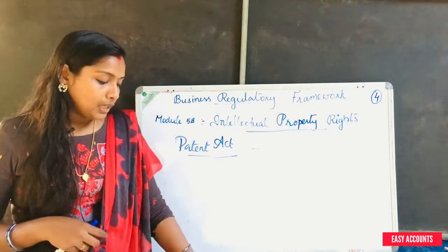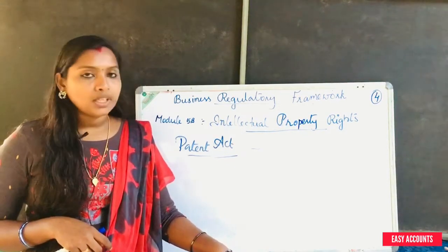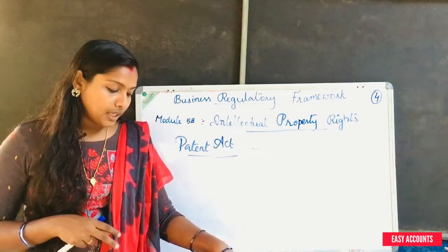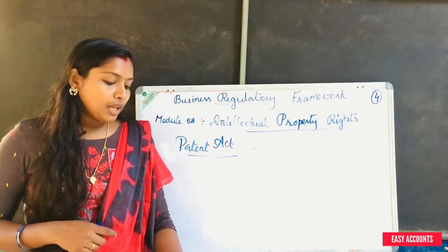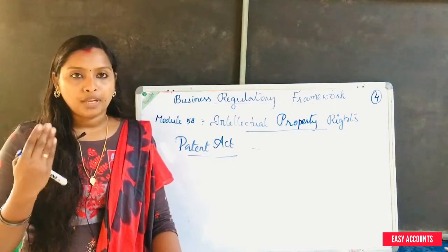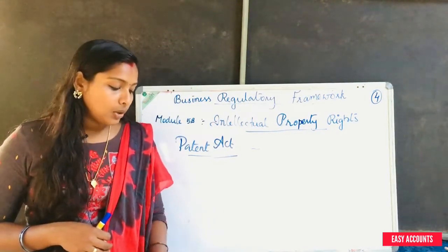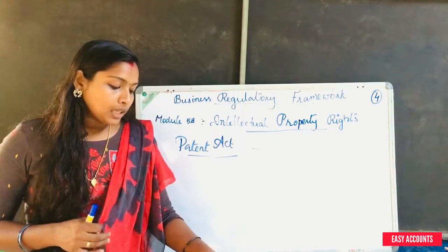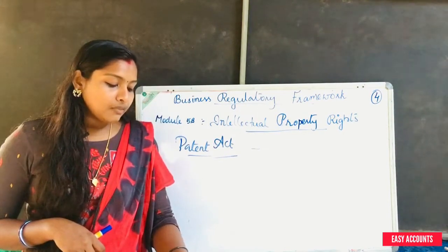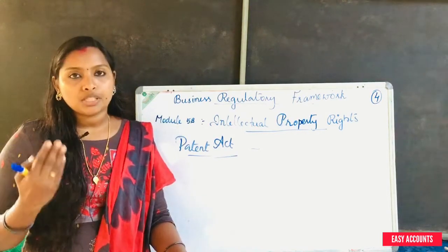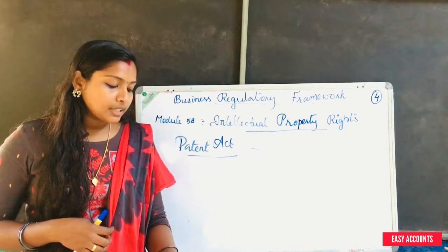This is the right of patent. One right is to exploit the patent. Another right is to license the patent to another person. The central government is empowered to use any invention for the purpose of government. If you want to use any invention for the purpose of government, the government shall give royalty or fees as per terms agreed upon.